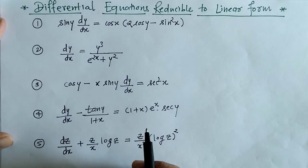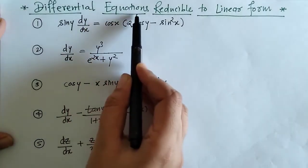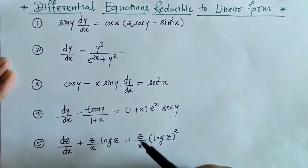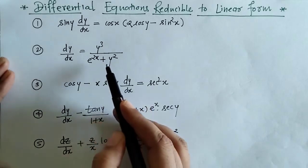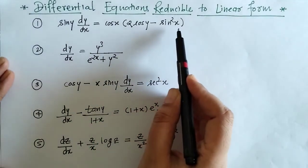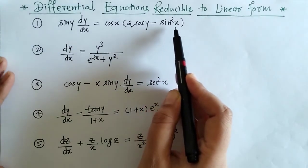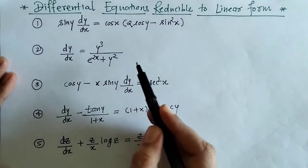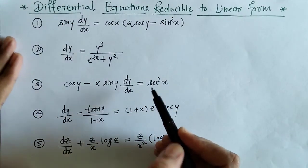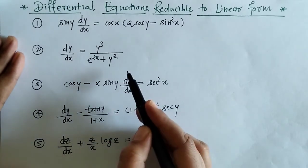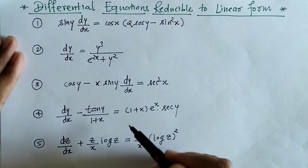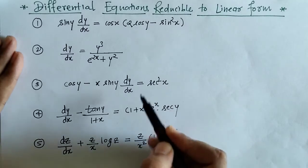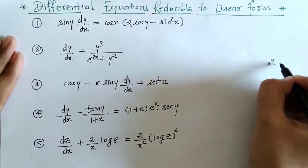Hello everyone, today we are going to see differential equations reducible to linear form. For this, let's have a look at some differential equations. We can observe that we can't separate the variables x and y, so this is not a variable separable form. These differential equations cannot be homogeneous, are not of linear form, and are not Bernoulli's form since we don't have a factor x raised to n or y raised to n.